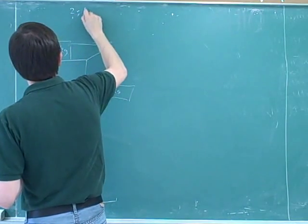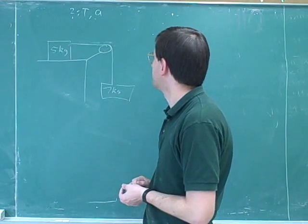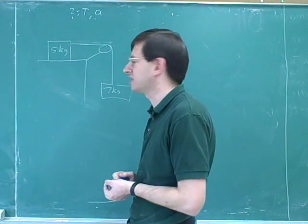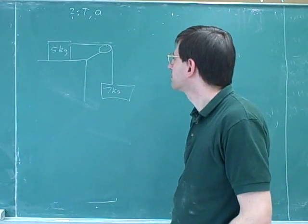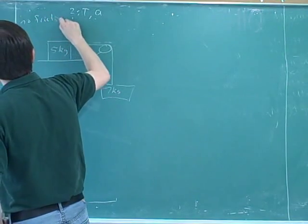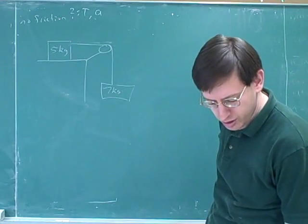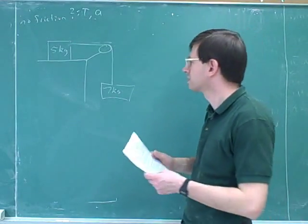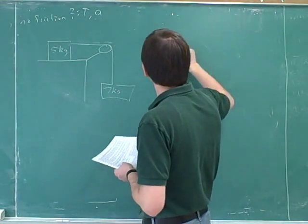All right. Let's actually start with this first. This is not a common type of problem, where one object is on the surface and the other one isn't. So let's figure out the tension and the acceleration here. Is there friction? Good question. Let's start with no friction. So what should we do first?